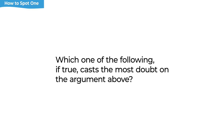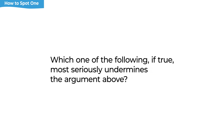Another example: 'Which one of the following, if true, casts the most doubt on the argument above?' Casting doubt represents calling it into question — weakening it — so that tells us we're looking at a weakened question. Similarly, 'which one of the following, if true, most seriously undermines the argument above?' — the words 'most undermines' are the indicator. So look in the question stem for language like 'undermines,' 'weakens,' and 'casts doubt on.' Those are common language cues for weakened questions.